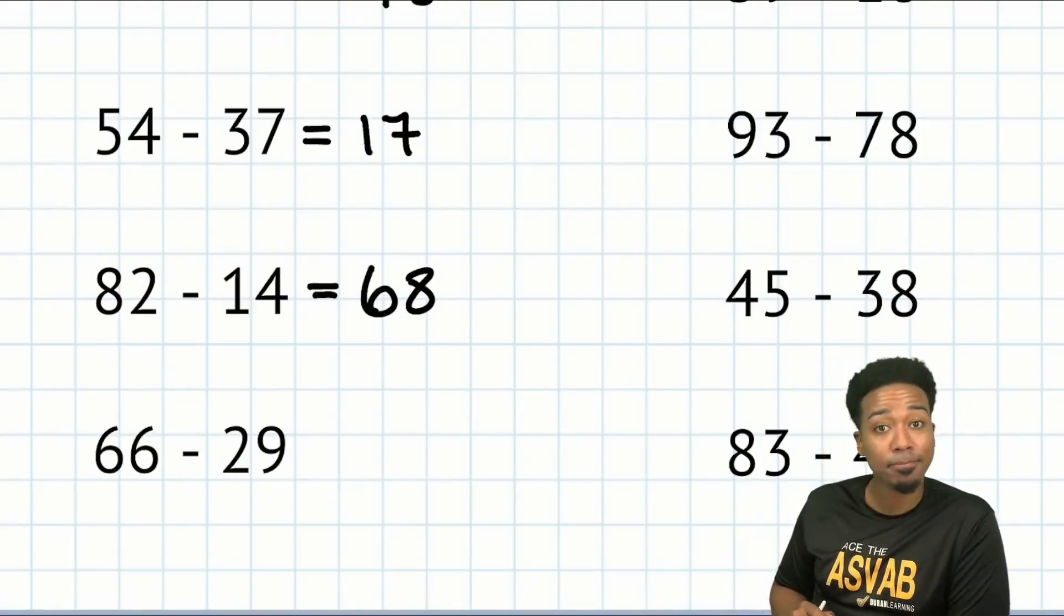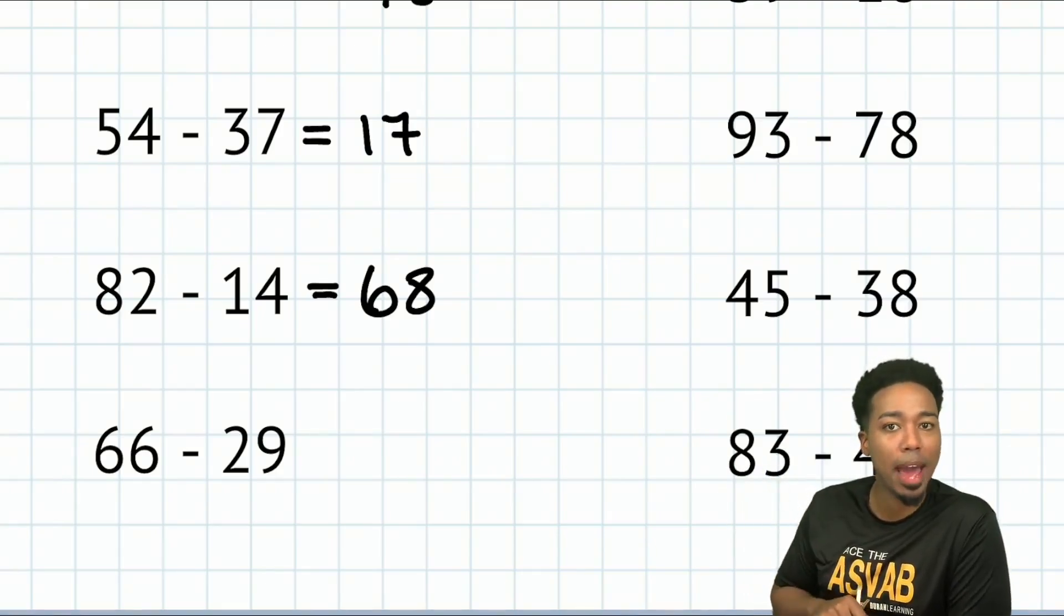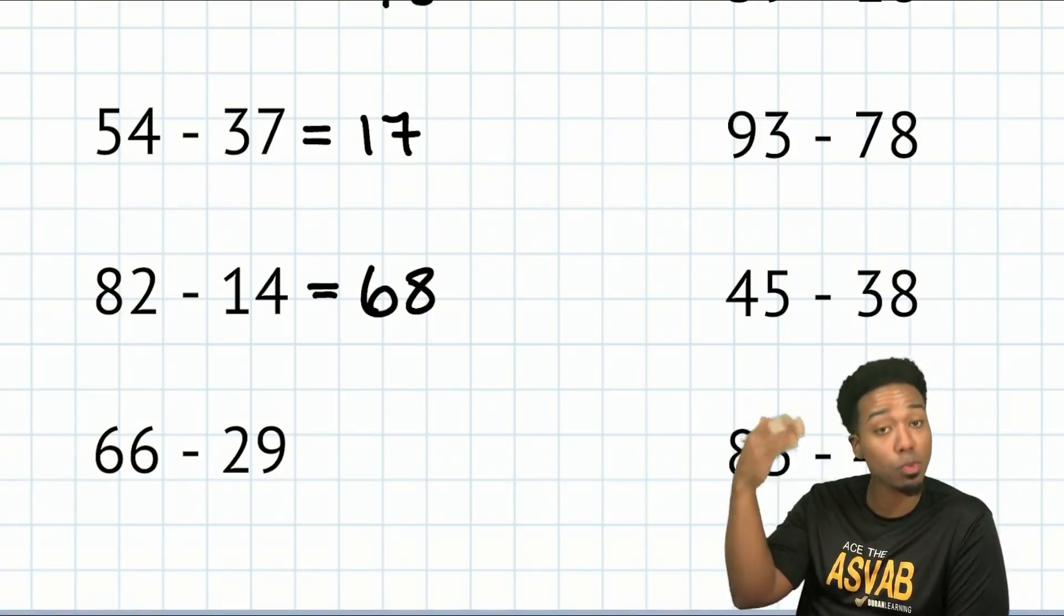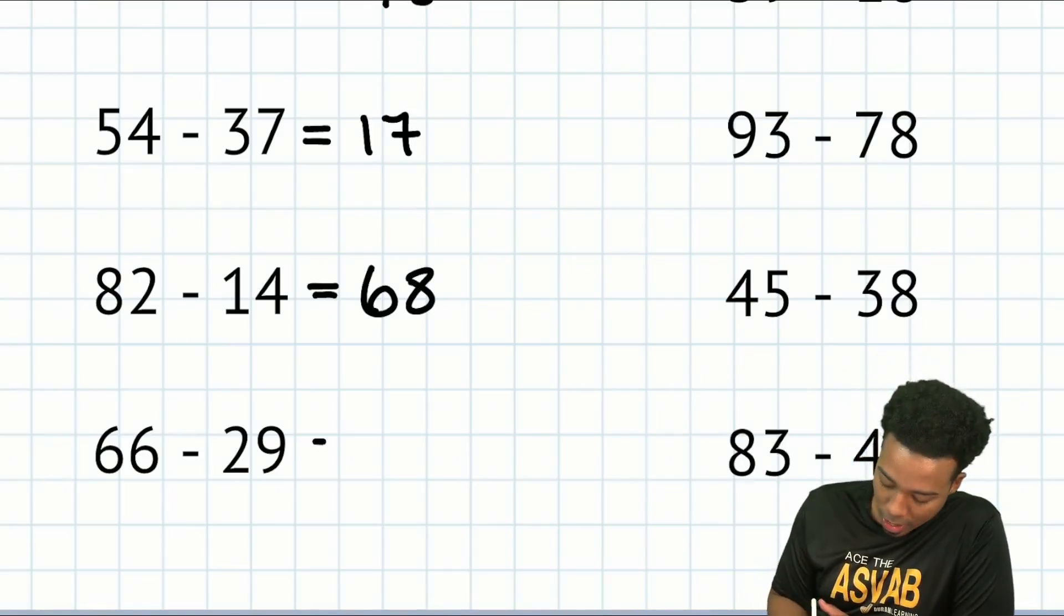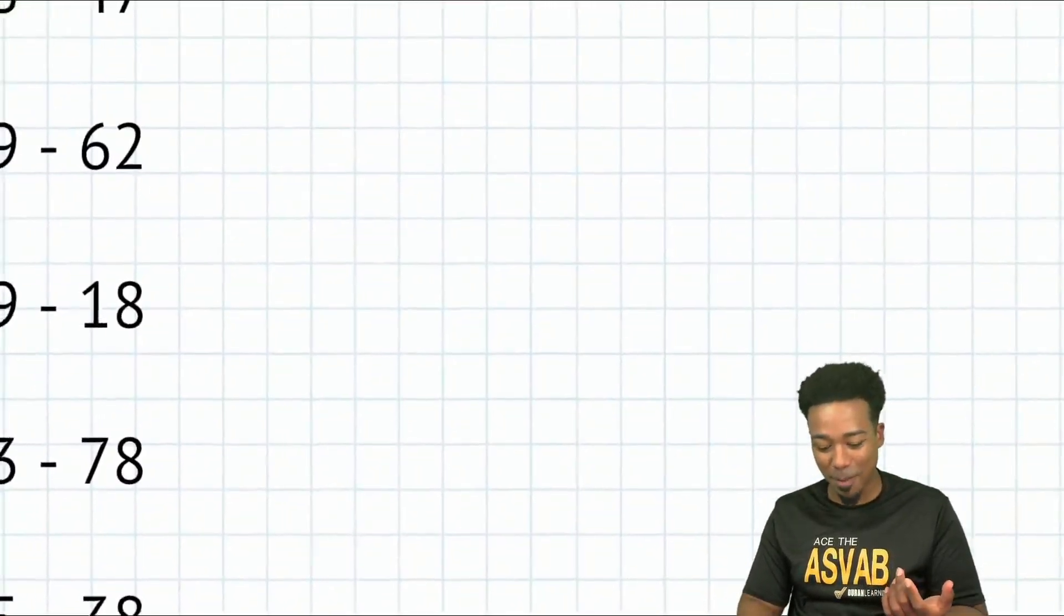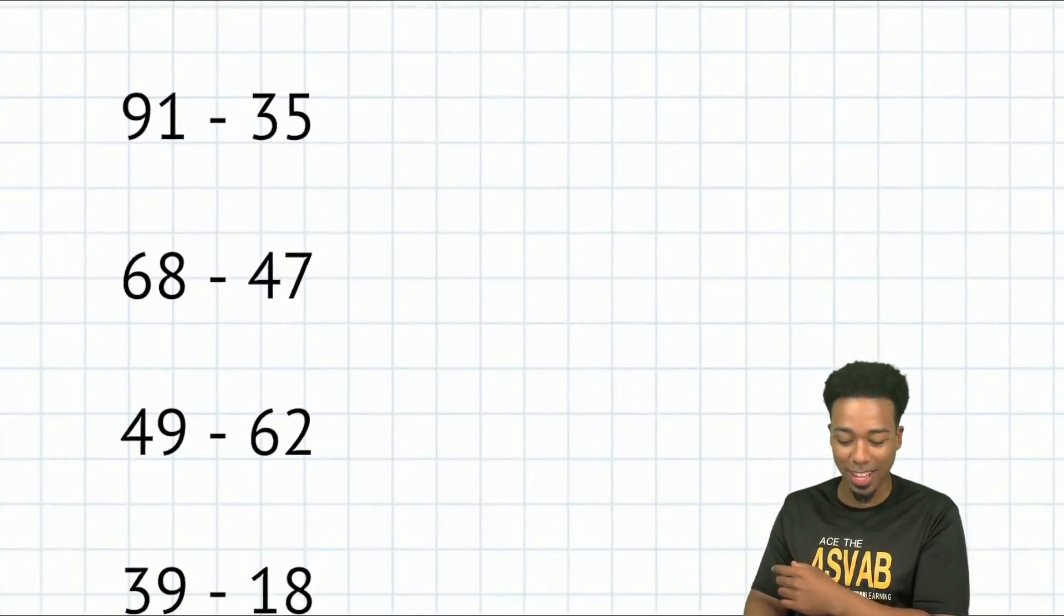66 minus 29. I'll just take away 30 and add one back. So that'll be 36 plus one is 37. So hopefully this is helping you out, my party people. Go ahead, try these out before I get started on them.